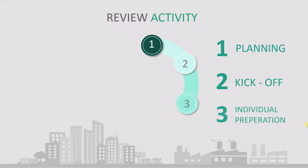The third activity is individual preparation. Whoever has to do the review will prepare by going through the documents, understanding them, and trying to find mistakes in those documents. So the first three activities in order are: planning, then kick-off, and then individual preparation.